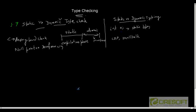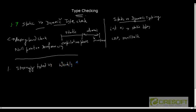There is another way to classify languages: on the basis of the strength of the type check, we classify them as strongly typed versus weakly typed. In a strongly typed language, we perform all kinds of type checks. In every operation, the types of the arguments taken by the operator must match the actual expressions being passed to that operation.